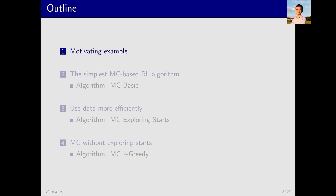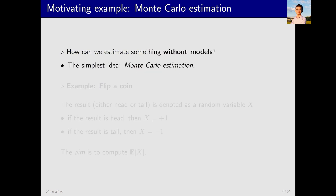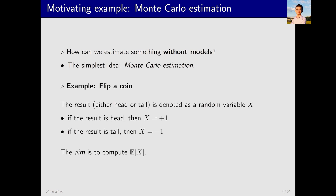Now let's look at the first part. When studying model-free reinforcement learning, perhaps the most challenging problem is how to estimate something without models. There's an important method here known as Monte Carlo estimation. Let me illustrate this method through an example: flipping a coin.